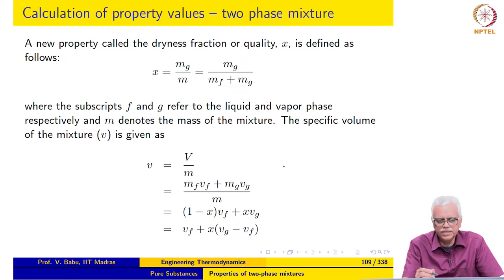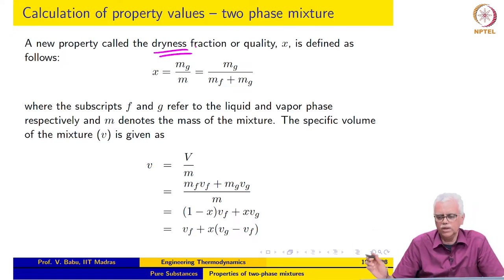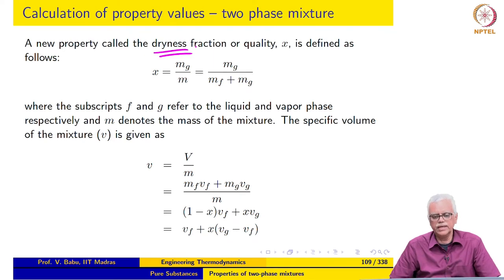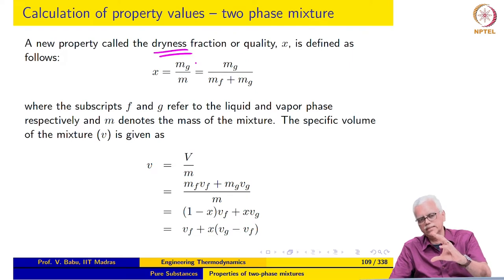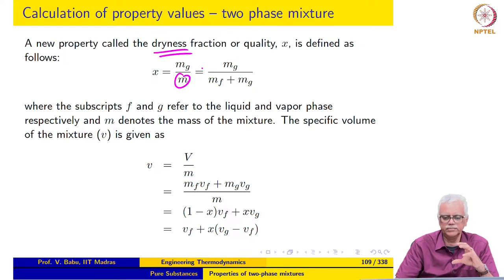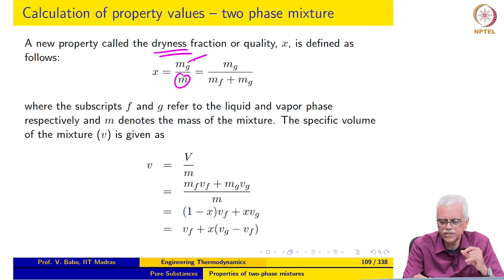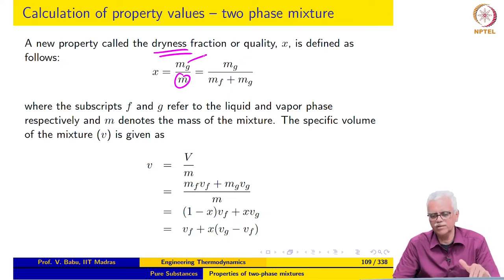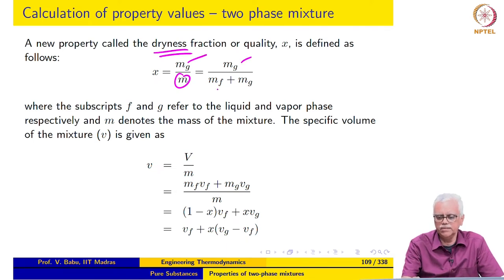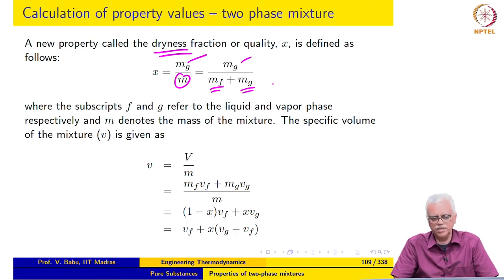In order to do this, we introduce a new property called the dryness fraction or quality, x. It is defined as follows: in a given system, let the total mass be m, which is a mixture of liquid water and water vapor. Let the amount of vapor be mg. Then the dryness fraction is defined as the ratio of the mass of vapor divided by the total mass — mg divided by m_liquid plus m_vapor, or mf plus mg.